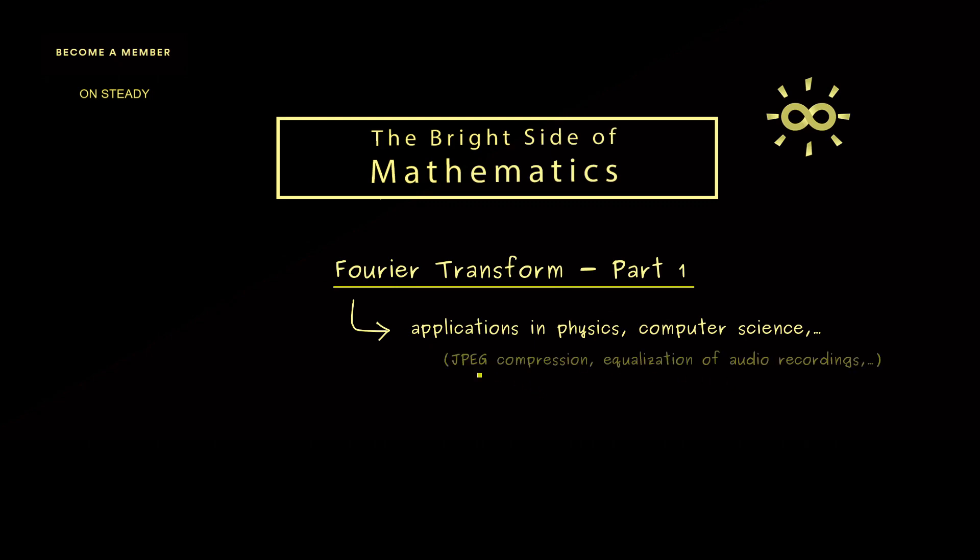One nice example one can always bring here is that the popular JPEG compression for digital pictures uses some form of a Fourier transform. However, to be clear from the beginning, in this video course here I will not talk about the applications because here we will do mathematics. This means also here we will analyze the Fourier transform in our typical mathematical way.